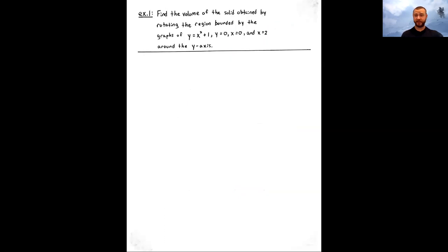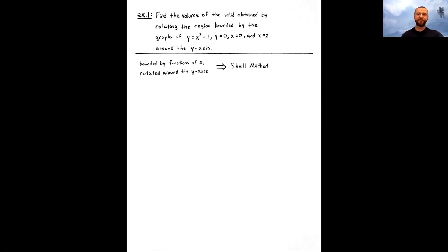Let's take a look at a simple example. Find the volume obtained by rotating the region bounded by y equals x squared plus 1, y equals 0, x equals 0, and x equals 2. This sounds similar to disk and washer method problems, but notice the difference: we're not rotating around the x-axis, we're rotating around the y-axis. When functions are given as functions of x and the region is rotated around the y-axis, that's the clue we're going to use the shell method.